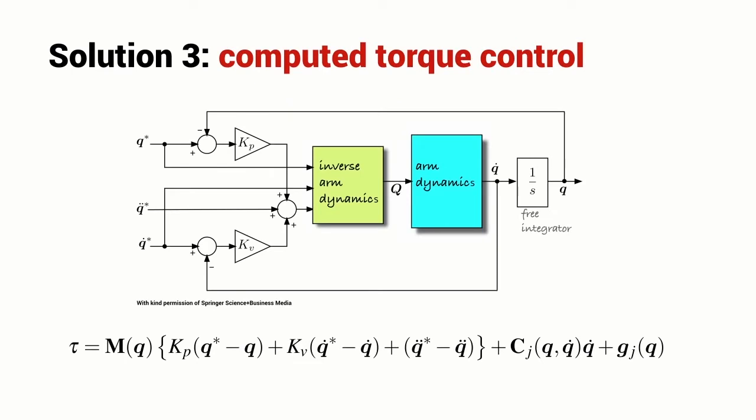The third approach that we can use is called computed torque control. It has some similarities, but also some important differences to the feed forward control expression. Here we can see a term which is effectively a proportional controller. Here we can see a term which is effectively a derivative controller and they are multiplied by the inertia matrix and here we have the centripetal and Coriolis term and the gravity term.